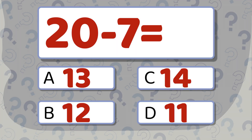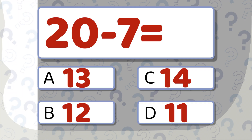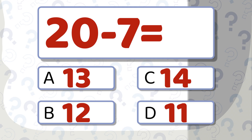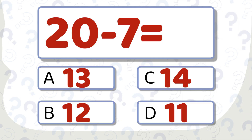20 minus 7 equals. Which number looks right? The correct answer is 13.